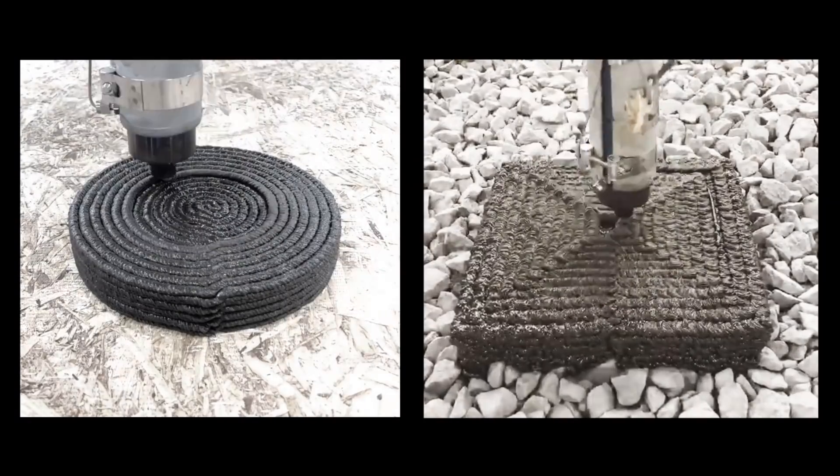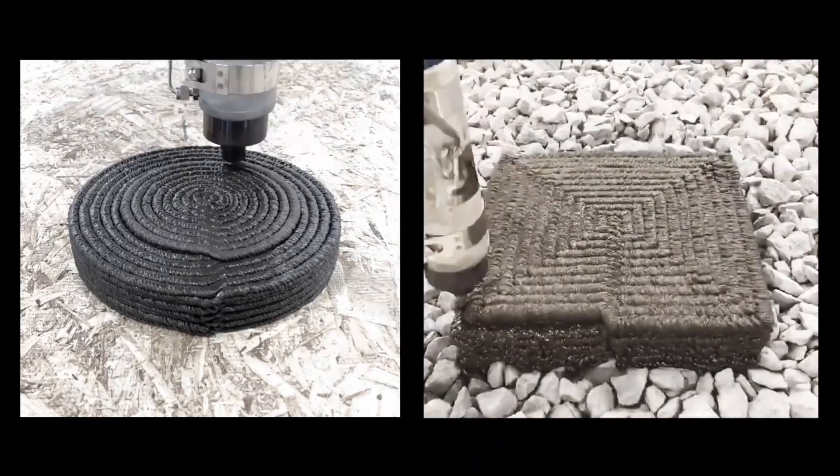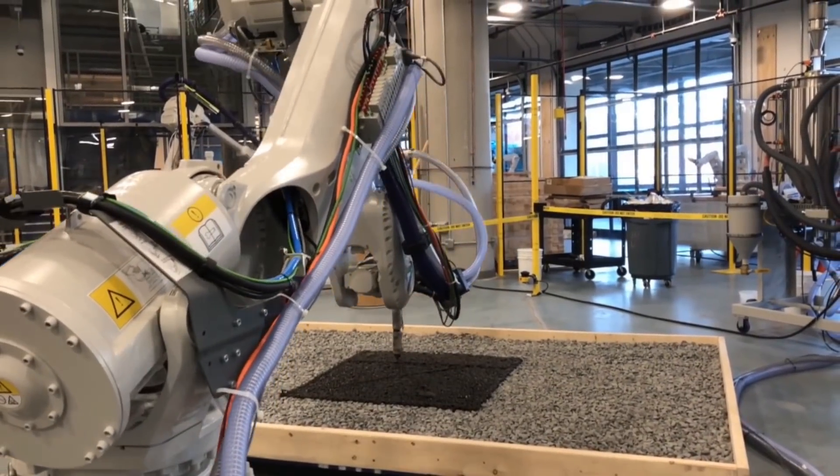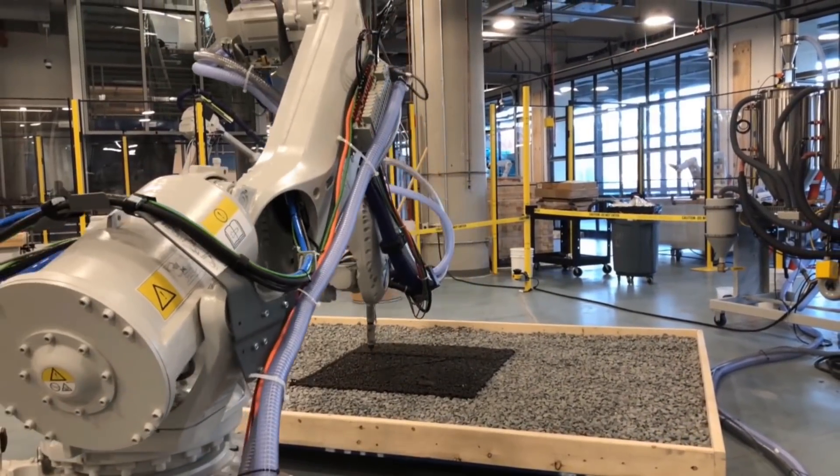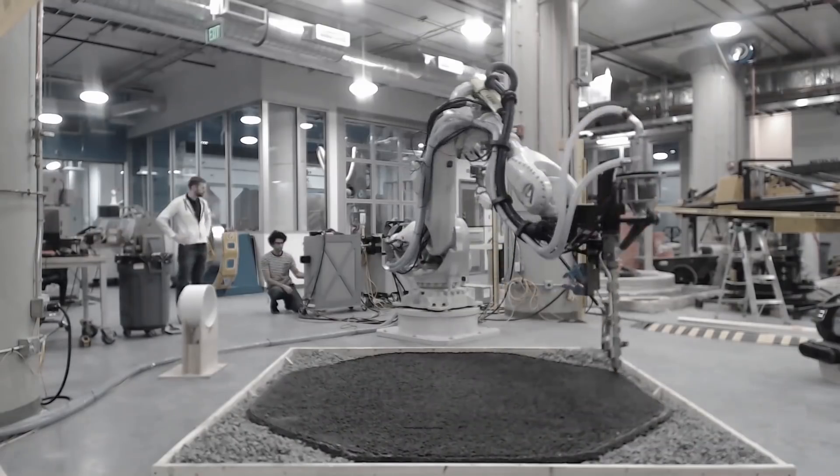In just five weeks, AI Space Factory progressed from isolated tests of our super-strong polymer to an autonomously printed large-area slab, our future habitat foundation subsequently validated by NASA.